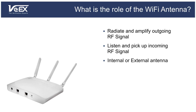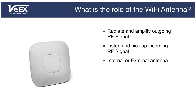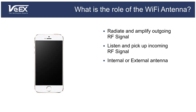Some antennas are external to the device and visible, while others are inside the equipment itself. For example, Wi-Fi access points can have either external or internal antennas, while laptops, tablets, and smartphones have almost exclusively internal Wi-Fi antennas.